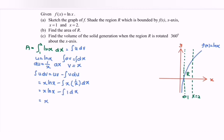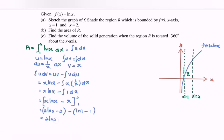So finally we have x ln x minus x, evaluated with limits 2 and 1. Substituting the limits: at x = 2, we have 2 ln 2 minus 2; minus at x = 1, we have ln 1 which equals 0, minus 1. So we have 2 ln 2 minus 0, minus 2 plus 1. Finally, the area equals 2 ln 2 minus 1, or 0.387 square units. That is the area of region R.